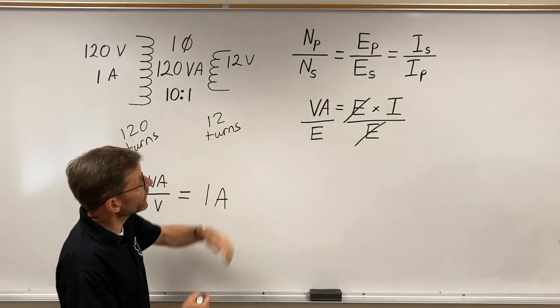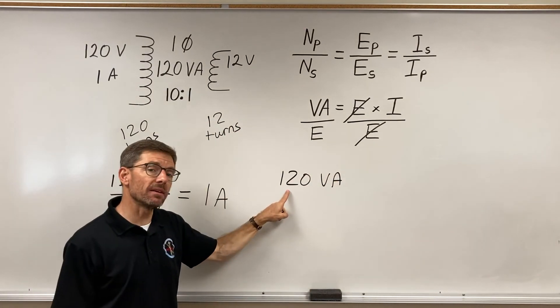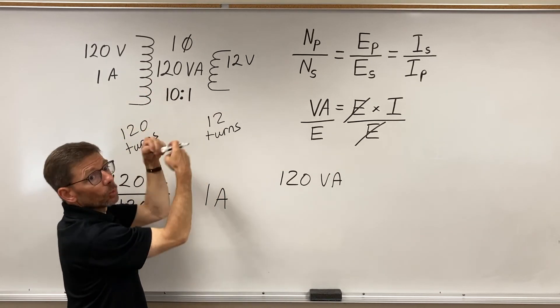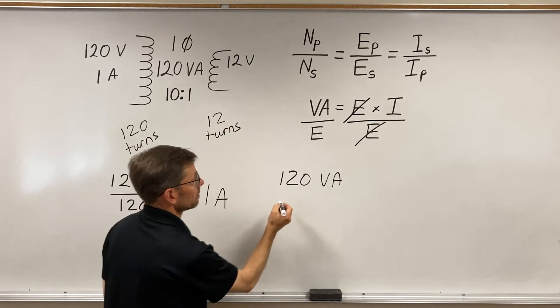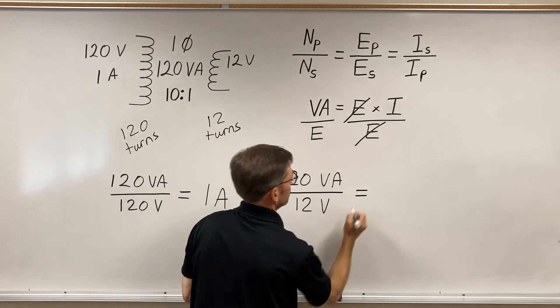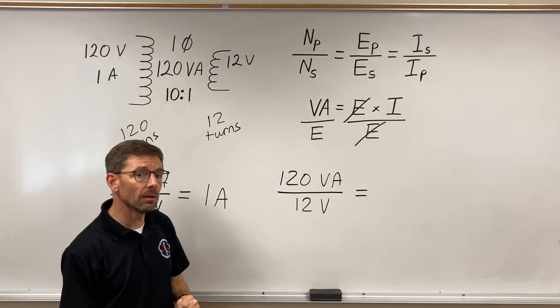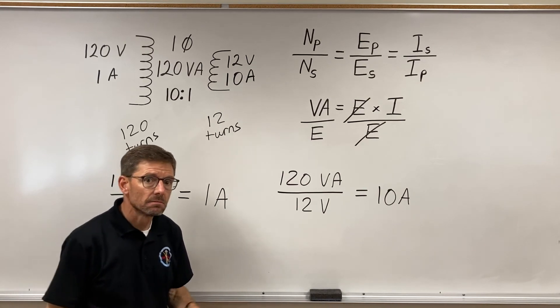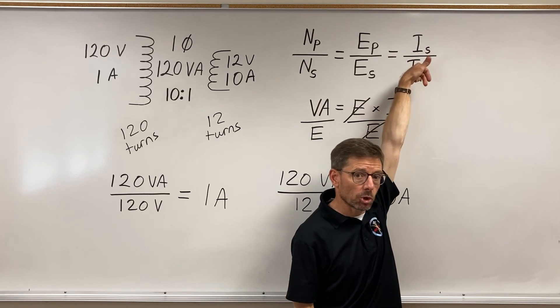On the secondary, I still have 120 volt amps. I told you the power coming in, we consider equal to the power going out. If I do my division, 120 divided by 12, 10 amps. Indeed. The current is therefore inversely proportional.